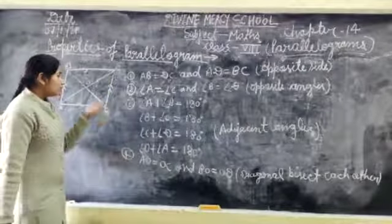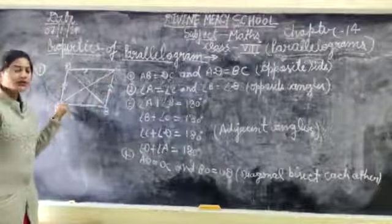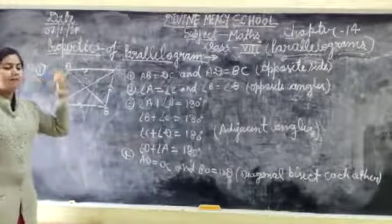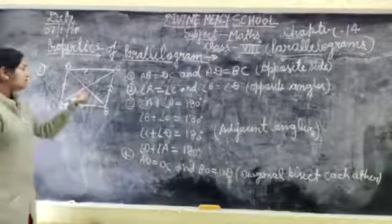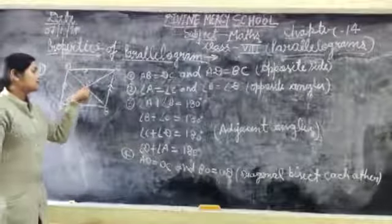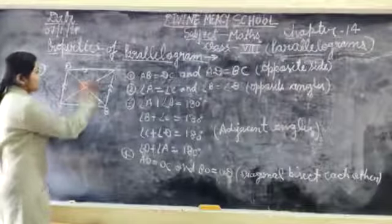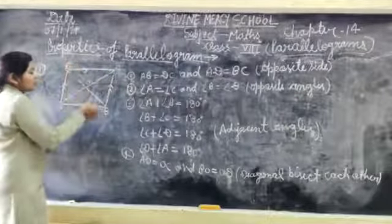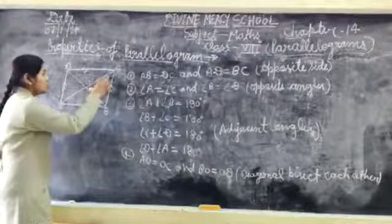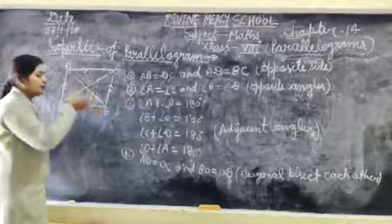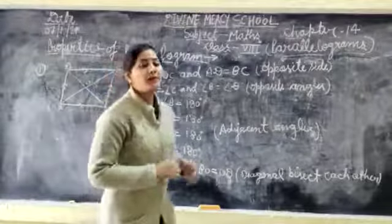Now the fourth property: diagonals bisect each other. The diagonals AC and DB intersect at one point — the center point O. AO is equal to OC, and OD is equal to OB. So the diagonals are divided into equal halves at the point of intersection.